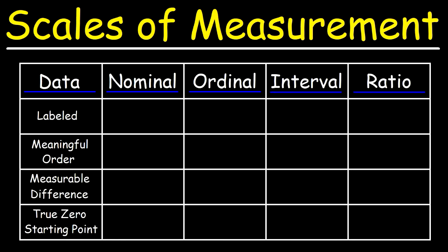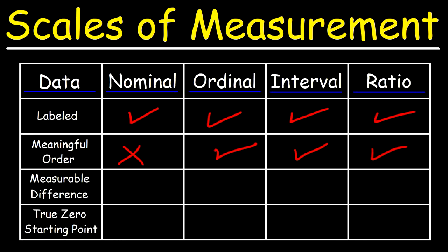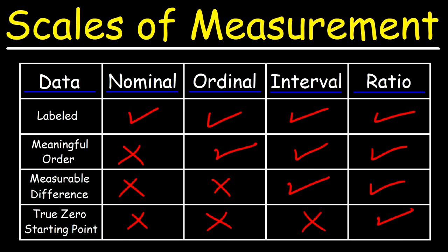Let's summarize what we've learned. All four forms of data can be labeled. Nominal scale data doesn't have any meaningful order, but for the other three forms the order does matter. We can only measure a difference for interval and ratio scale data — nominal and ordinal scale data don't support measuring differences. And the only one with a true zero starting point is the ratio scale data. That's it for this video — thanks for watching.